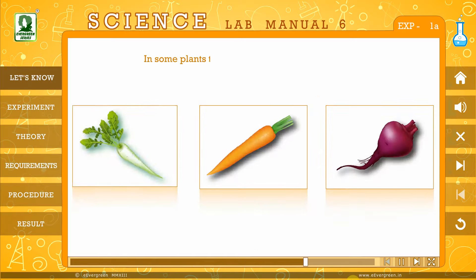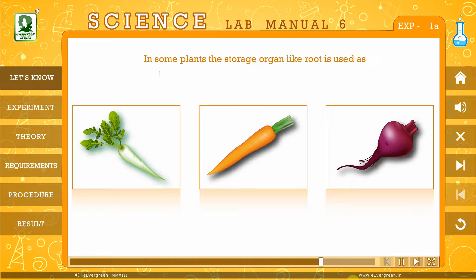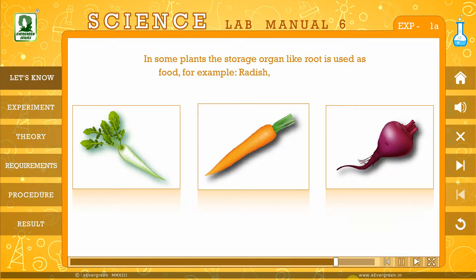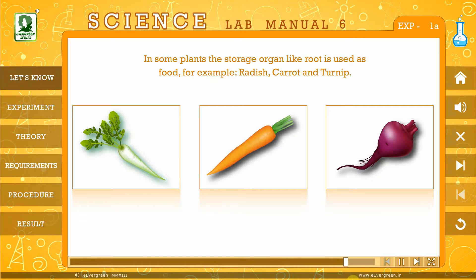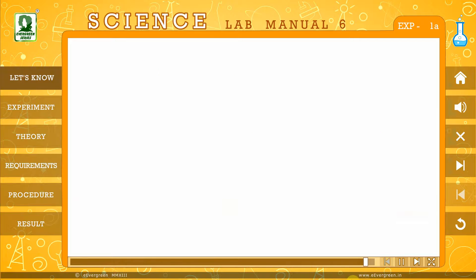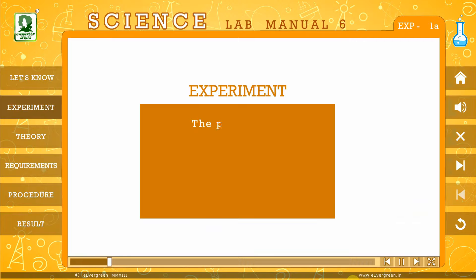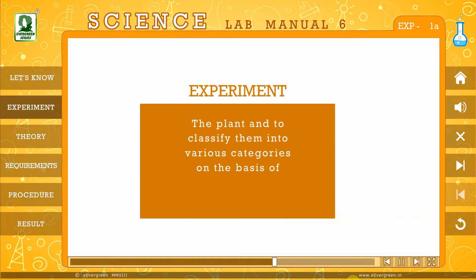In some plants, the storage organ like the root is used as food — for example, radish, carrot and turnip. Now, let us move on to the experiment, which is to identify the plants and to classify them into various categories on the basis of products obtained from them.